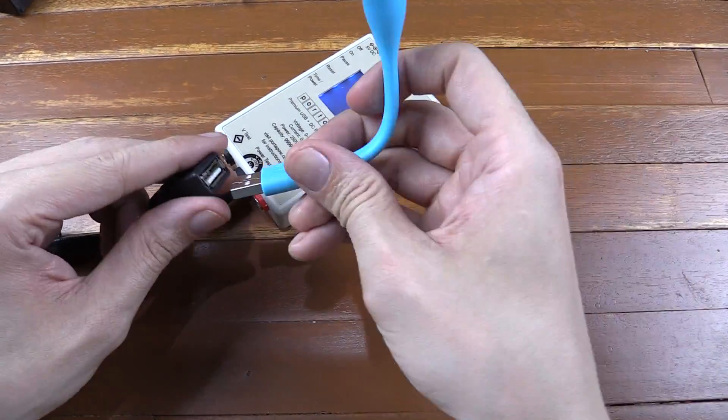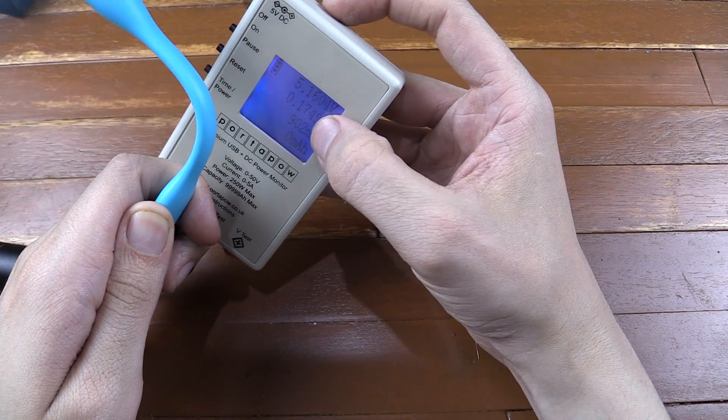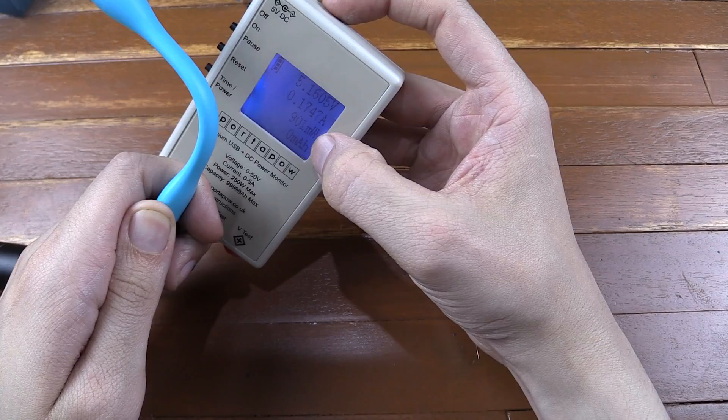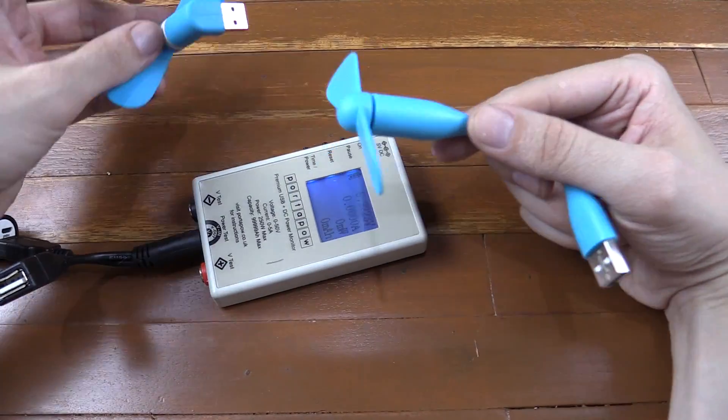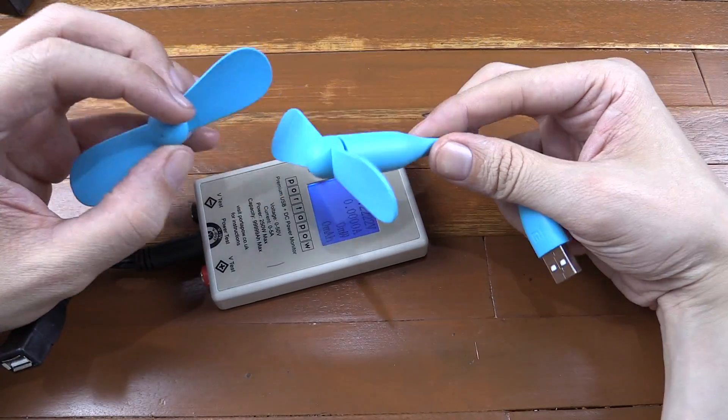Now let's measure the new one. Okay so on the new one, 5.1 volts, 0.17 amp, under a watt. So this new one is basically less than half the power of the old one, and you do notice it.